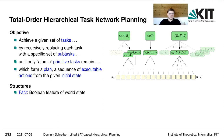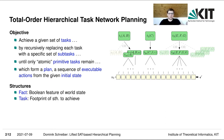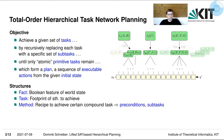In a world state, a fact is a Boolean feature, so a world state is a collection of facts. A task is merely a syntactical footprint of something we wish to achieve. And a method is a recipe to achieve a certain compound, so non-primitive, task.